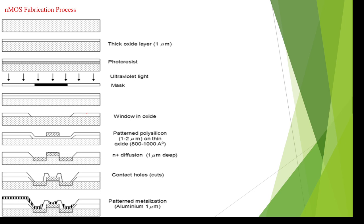Coming to the fabrication, we can explain a minimum of six to eight steps to design an nMOS transistor. In the first step, we take the p-substrate, which is having holes, made from silicon material.